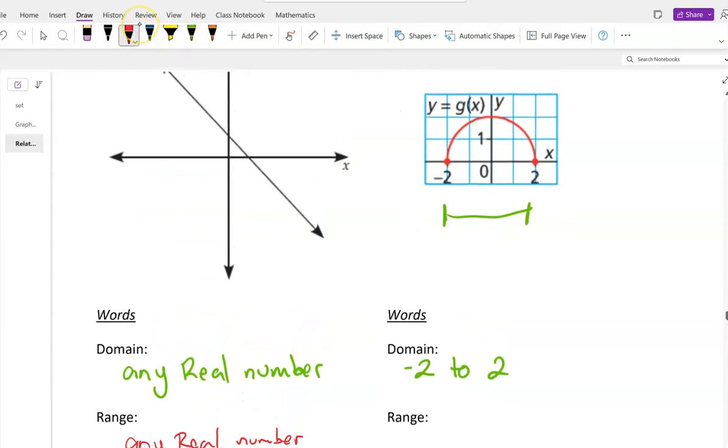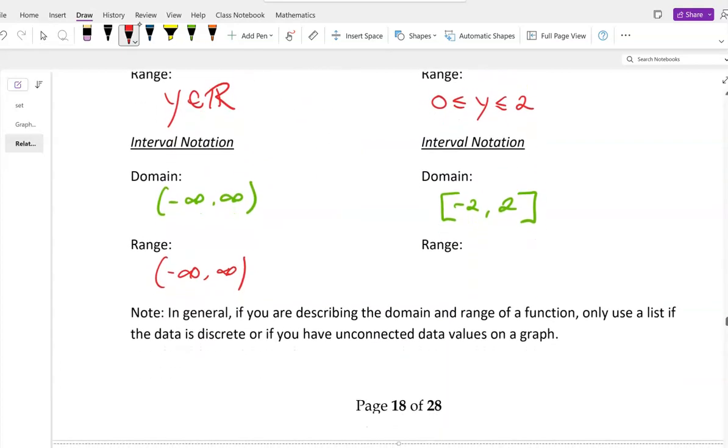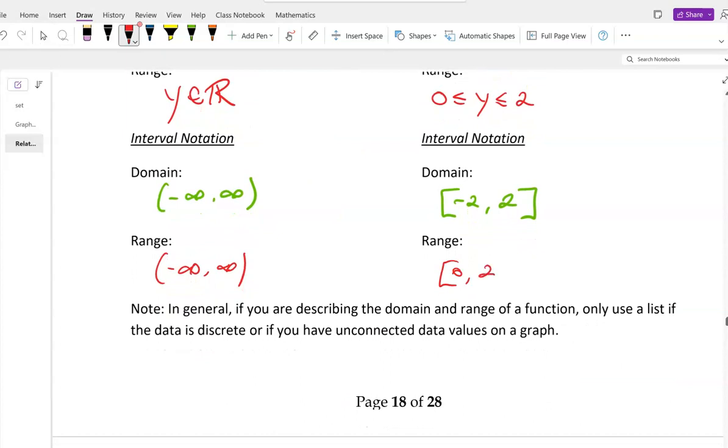How about range? Well, range goes from 0 up until 2. So we'll go 0 to 2. And we'll put 0 to 2. 0 to 2.